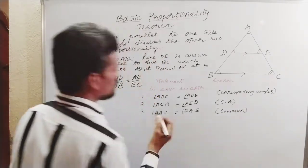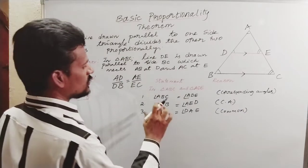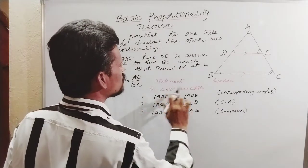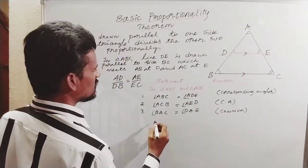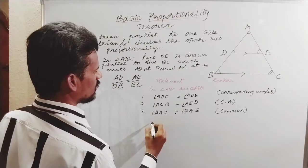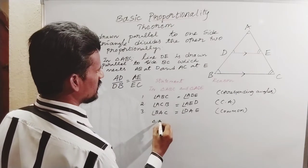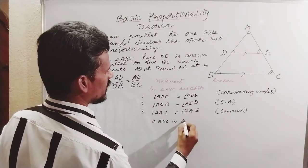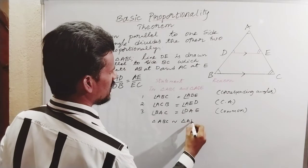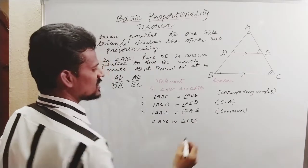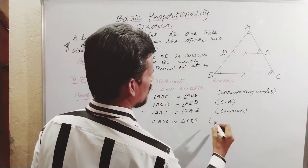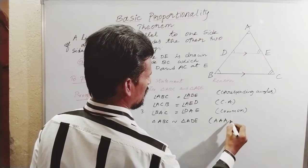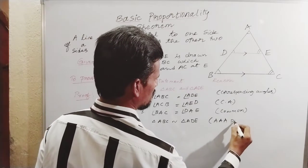Observe these two triangles — these two triangles are similar. Why are they similar? Triangle ABC is similar to triangle ADE. These are similar because of the AAA (Angle-Angle-Angle) postulate.